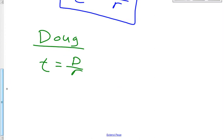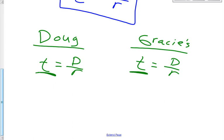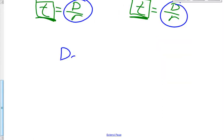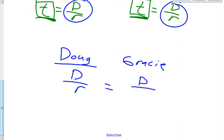And Gracie's time equals distance over rate. Just like in problem number 6, if time equals time, if those two times are equal to each other, which it says that they are, then their distance over rates are equal to each other. So Doug's distance divided by rate is equal to Gracie's distance over rate. So that's how we're going to solve this one.